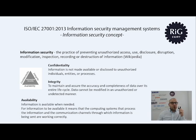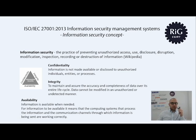A few words about the information security concept. First, the definition of information security — let's go to Wikipedia. We will find there that information security is the practice of preventing unauthorized access, use, disclosure, disruption, modification, inspection, recording, or destruction of information. There are three elements forming the CIA triad that are at the heart of information security, and they are confidentiality, integrity, and availability.